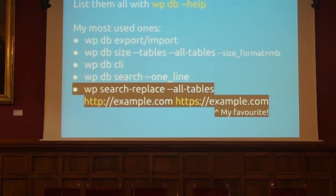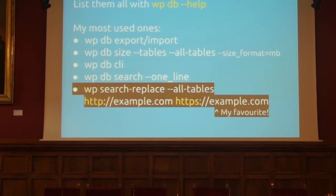Tip number two: learn how to use WP-CLI. It's very convenient for database operations. You can quickly find out what your biggest tables are, and you can search any string from your database. My favorite command is WP-CLI search-and-replace. For example, in your entire database you can change an HTTP address into the secure HTTPS version — very easily and quickly.